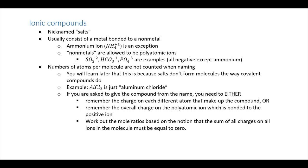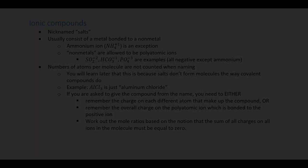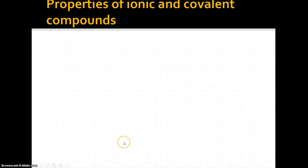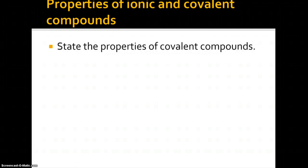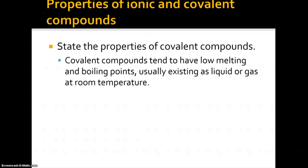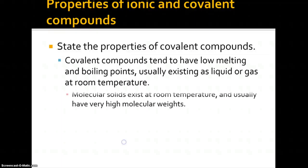Now let's look at properties of ionic and covalent compounds. State the properties of covalent compounds. Covalent compounds tend to have low melting and boiling points, usually existing as liquid or gas at room temperature. Molecular solids can exist at room temperature and usually have very high molecular weights.